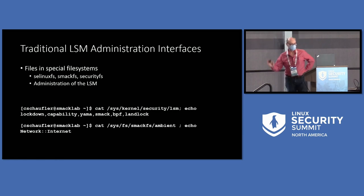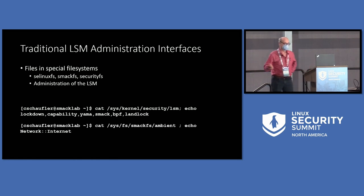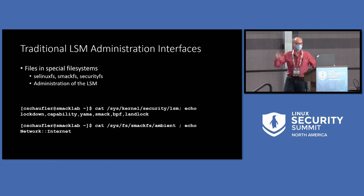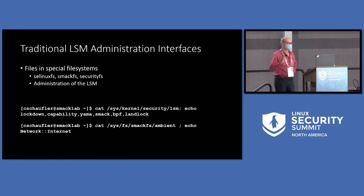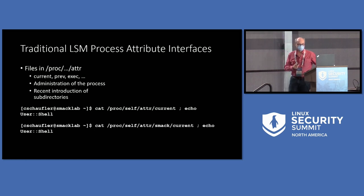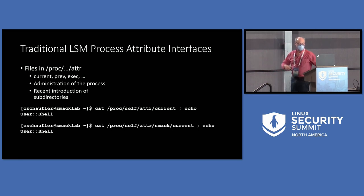Traditionally, back in the bad old days before 6.8, you did the administration via special file system entries. SELinuxFS, SMACFS, and SecurityFS are all mechanisms you can use to administer the LSM. For example, we can use SecurityFS to look at the list of security modules on the system and use SMACFS to look at one of the network configuration values. We can also do process attribute manipulation and identification using proc/self/attr. Some LSMs use all of those entries, some use one, and some use none.